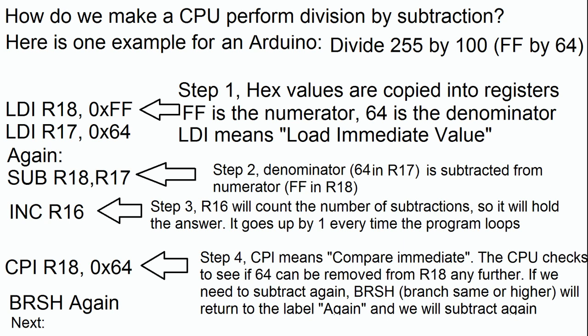Step one, the hexadecimal values are copied into the registers. FF is going to be loaded into R18 and then immediately after that 64 is going to be loaded into R17.